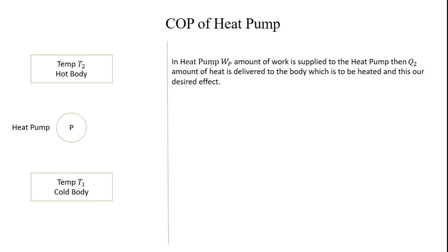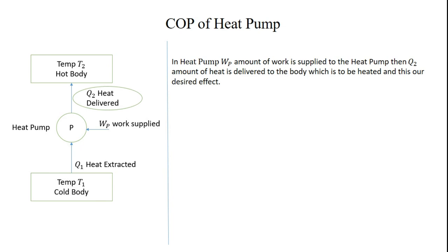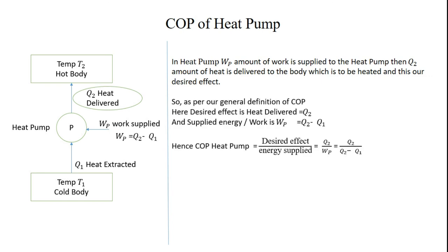The last point: COP of heat pump. In the heat pump, WP amount of work is supplied. Q2 amount of heat is delivered to the body to be heated — this is our desired effect. The supplied work WP = Q2 − Q1. As per our general definition of COP, the desired effect (heat delivered) is Q2, and the supplied work is WP = Q2 − Q1. Hence, COP of heat pump = Q2 / WP = Q2 / (Q2 − Q1).